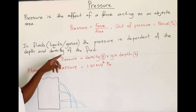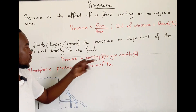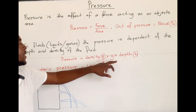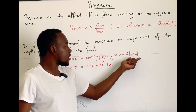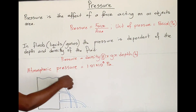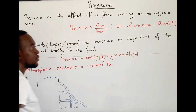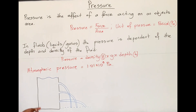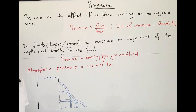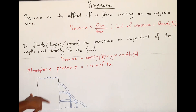To find pressure in fluids, we use the formula: pressure equals density (rho) times gravitational acceleration (g), which is 10 m/s² on Earth, times depth (h). So P = ρgh. Density and depth are the two factors that determine the size of the pressure in a fluid. If we are dealing with one specific liquid, then depth is the determining factor for what the pressure will be.